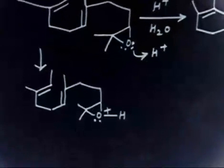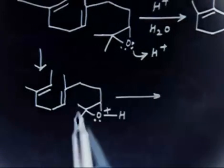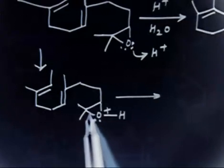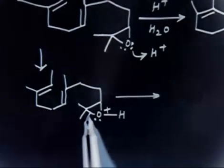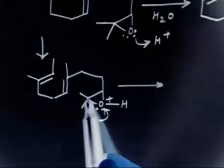Now we have two options: either I can open this bond or that bond. If I open this bond, I will have a carbocation here; if I open that bond, I will have a carbocation there. This one is a tertiary carbocation and that is a secondary carbocation, so I have to open the bond giving the tertiary carbocation. If I open this bond, there is a plus charge on this carbon.